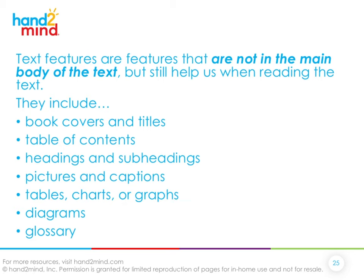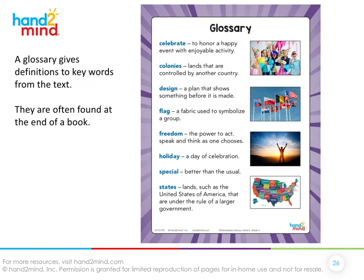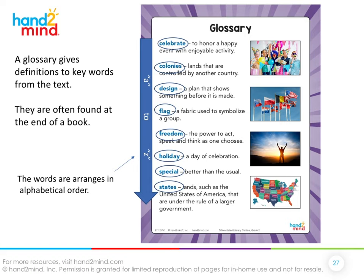Glossaries are very important text features. A glossary gives definitions to key words that are in the text, and they're often found at the end of the book. An important note about a glossary: they're always going to be arranged in alphabetical order from A at the top to Z at the bottom. If it's multiple pages, the first word is closest to A and the last word is closest to Z.